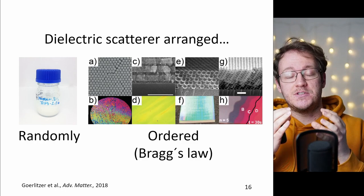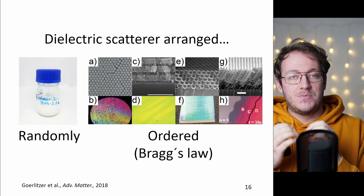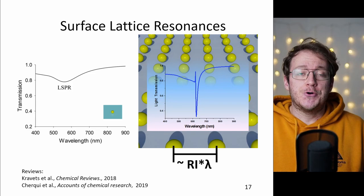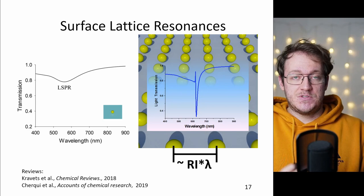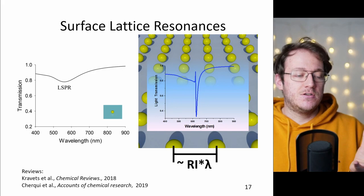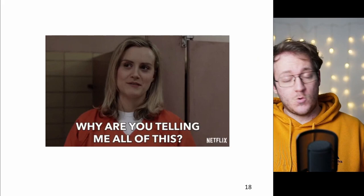When you take a scatterer and you put it in a very defined lattice then using Bragg's law we get typically a very sharp nice resonance. Something similar happens if you take a plasmonic particle and put it in a very defined lattice. If the distance between the particles is roughly in the order of the refractive index times the wavelength of the resonance you can see the appearance of a new resonance which is called the surface lattice resonance and this is now much much stronger and much sharper because it is coupling between the Bragg mode and the localized surface plasmon resonance.